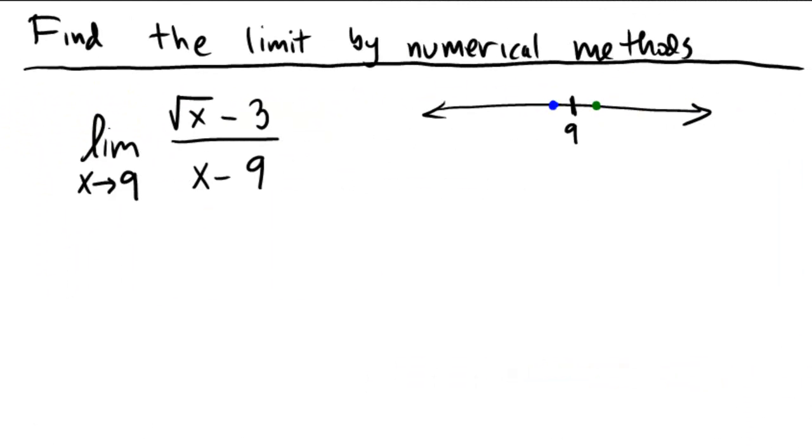This problem asks us to find the limit by numerical methods. You're not supposed to use algebra and simplify for this particular problem. We're supposed to use numerical methods. So we want to find the limit as x goes towards 9 of √x minus 3 over x minus 9.